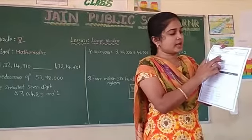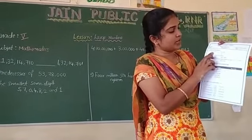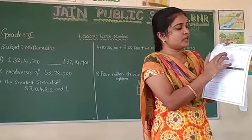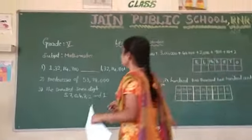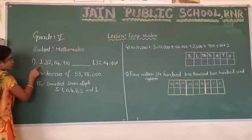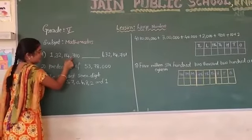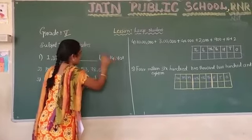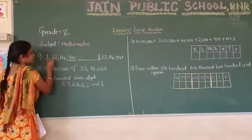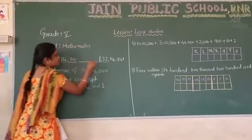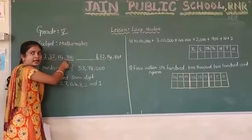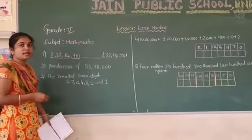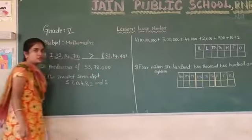First question: choose the correct answer. Compare 1 crore 32,14,710 and 1 crore 32,14,701. The crore, lakh, and thousand digits are the same. In the hundreds place, 7 is the same; in the tens place, 1 versus 0. 710 is greater than 701. So 1 crore 32,14,710 is greater. Move to the next question.